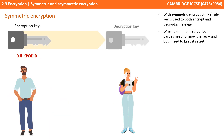With symmetric encryption, a single key is used to both encrypt and decrypt the message. When using this method, both parties need to know the key, and both need to keep it secret. The same key can be used multiple times, or alternatively, a unique key could be generated each time in an attempt to make it harder to crack.